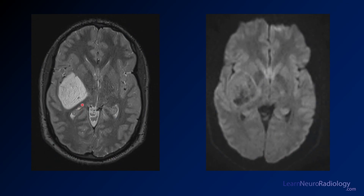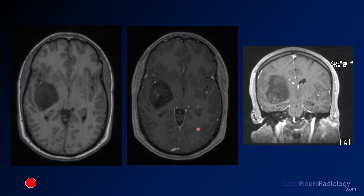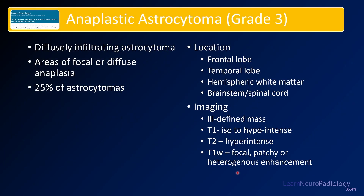Here are the MRI images. On T2, you see that mass with pretty well-defined margins. On diffusion, it's pretty iso-intense to the surrounding brain, with maybe some areas of low diffusion signal. On pre- and post-contrast, not much on the pre, but on post-contrast you see little wispy areas of enhancement centrally — maybe where those areas of hemorrhage or blood products were — and a little enhancement inferiorly. This is a grade three astrocytoma, an infiltrating astrocytoma with areas of anaplasia, about 25% of astrocytomas. Similar location to the grade twos, they can also involve the brainstem and spinal cord, with patchy areas of enhancement.